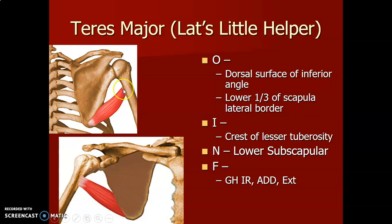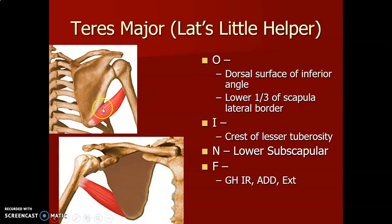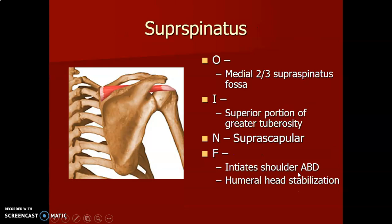The rotator cuff muscles are made up of supraspinatus, infraspinatus, teres minor, and subscapularis. Supraspinatus originates from the supraspinous fossa above the spine and inserts on the superior part of the greater tuberosity of the humerus. Innervated by the suprascapular nerve, it initiates shoulder abduction — causing the first 15 degrees of shoulder abduction — and stabilizes the humeral head.